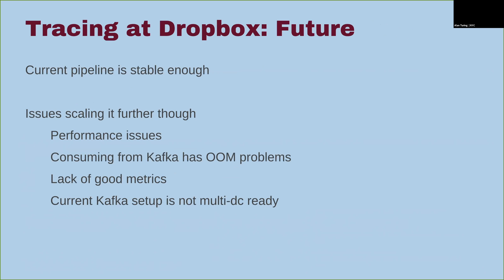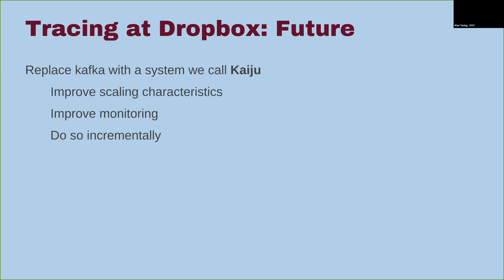That's what we have today. For the future, we're trying to push it further. A few problems: the current system doesn't scale much beyond 0.03% of traces, still has OOM problems and load spikes, and doesn't have a good set of metrics. Additionally, the Kafka setup we use to move spans from processes to the ingester is not multi-DC ready, and we want to scale beyond one data center. So we've built a system we call Kaiju, which improves the scaling characteristics, improves monitoring, and we're doing so incrementally — it's just another step in evolving Dropbox's tracing system.